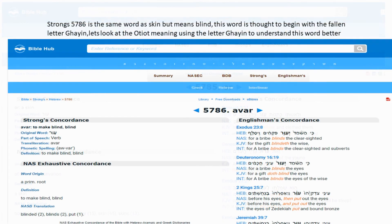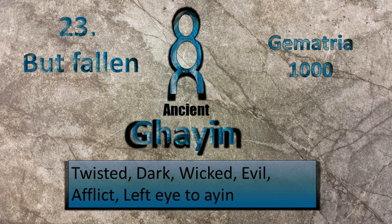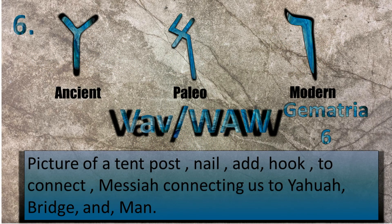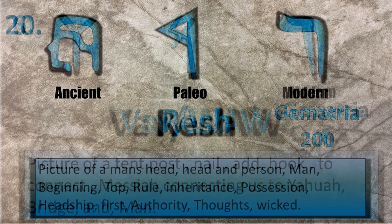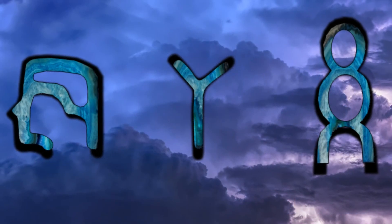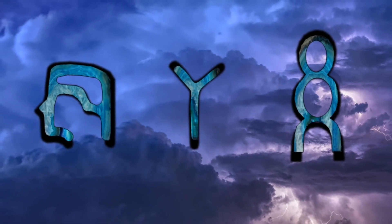Strong's 5786: 'Avar' is the same word as skin but means blind. This word is thought to have begun with the fallen letter Gaion. The letter Gaion is a picture of twisted ropes — it used to be a Hebrew letter but has fallen off the alphabet. It means dark, wicked, evil, afflict. It is like the left eye to the letter Ayin. Combined with Vav (to connect) and Resh (man's head), the word created by Gaion-Vav-Resh means blind — showing that when man is connected to evil, he is truly blind.